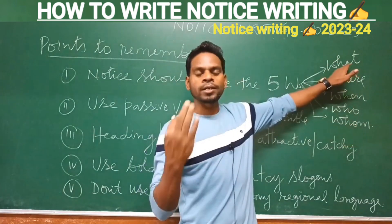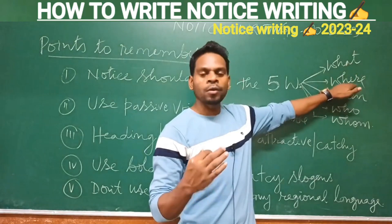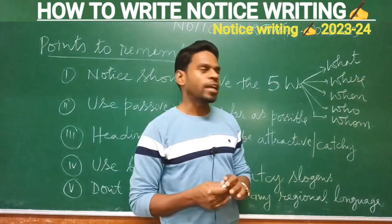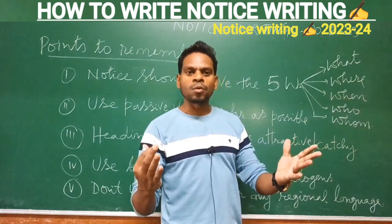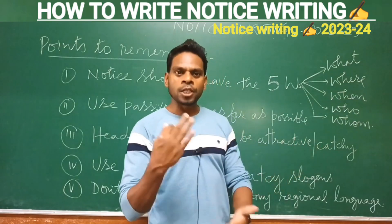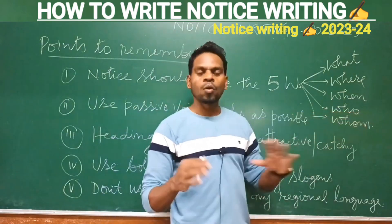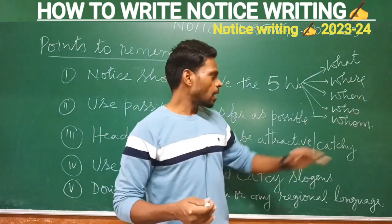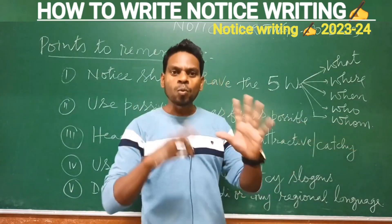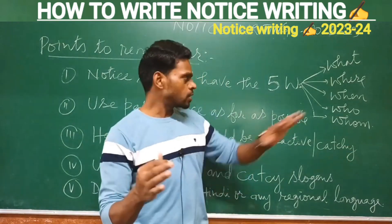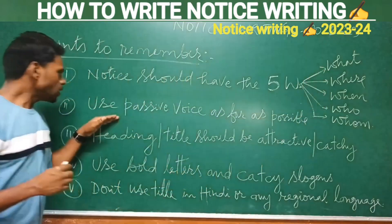What — you have to write the name of the event. Where — where this particular event is taking place. When — what time this particular event will take place. Who — who all can participate. And finally, whom — the participants, whom they can approach. These things you have to keep in mind.